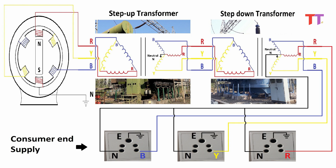Earthing is done locally at the consumer end itself. This is how live, neutral, and earth terminals reach our houses from the generator end.